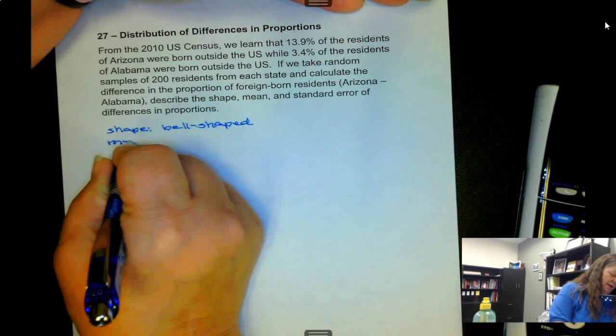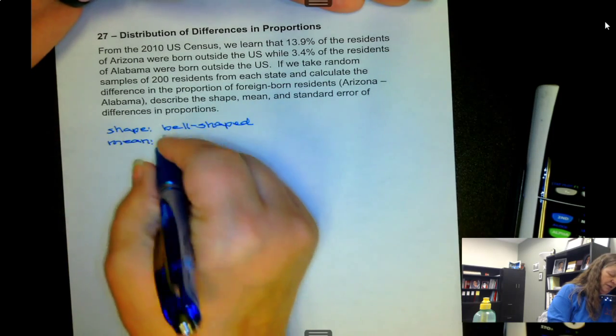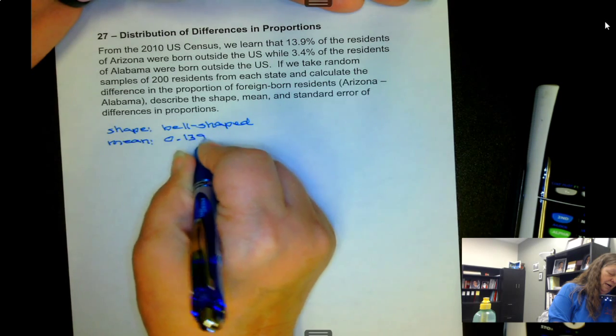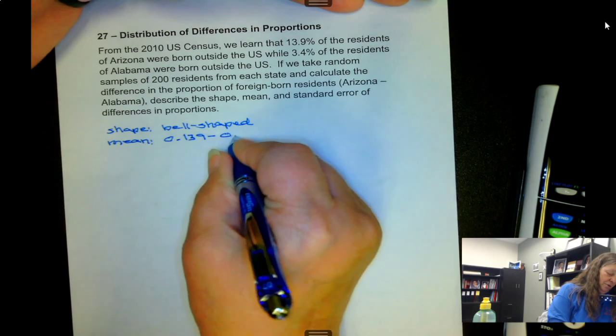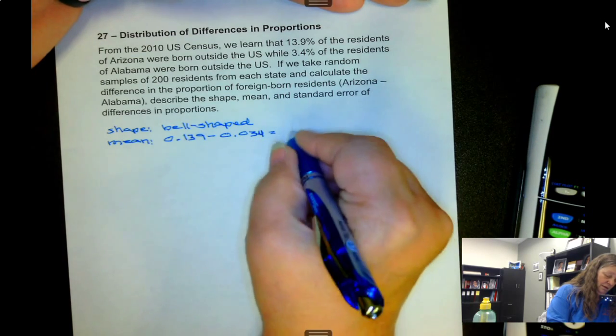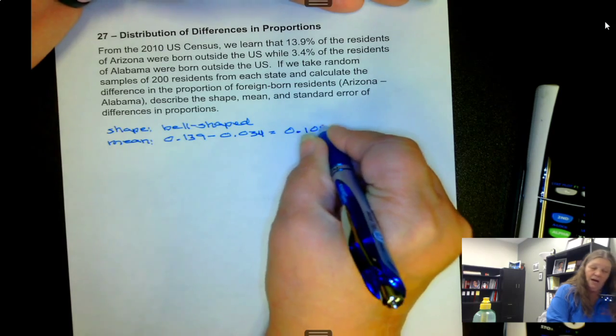The mean is going to be the difference, which is 0.139 minus 0.034, which is 0.105.